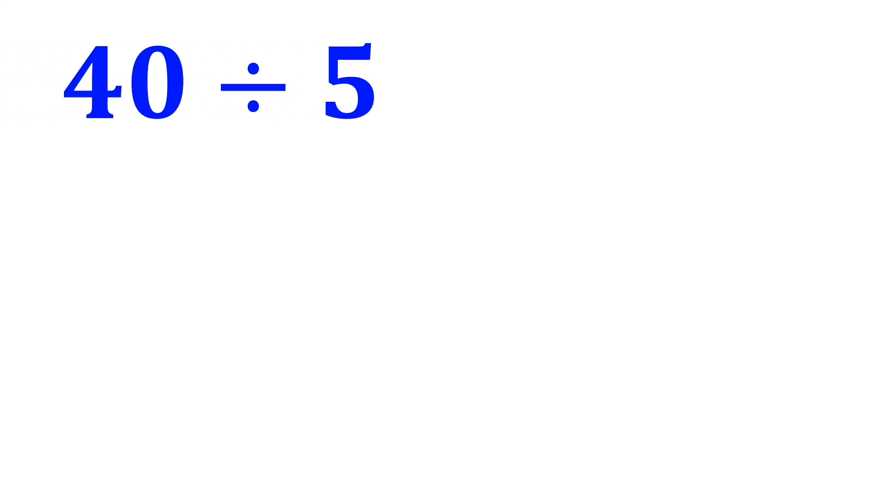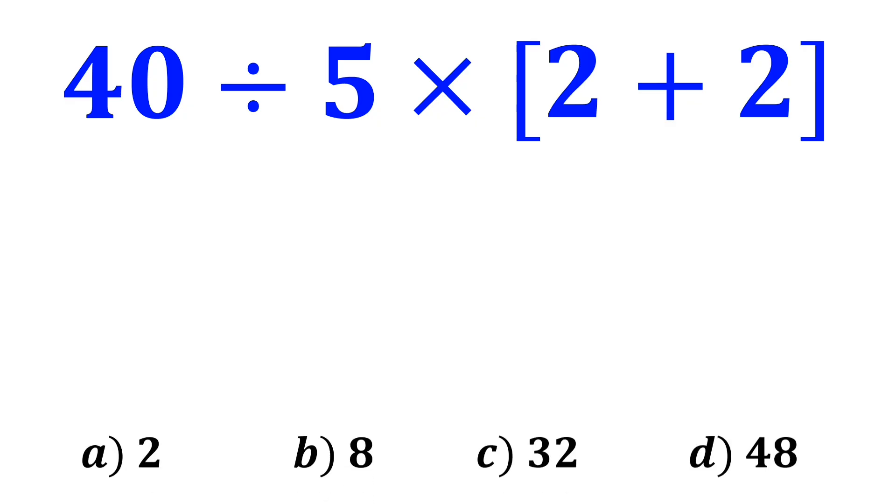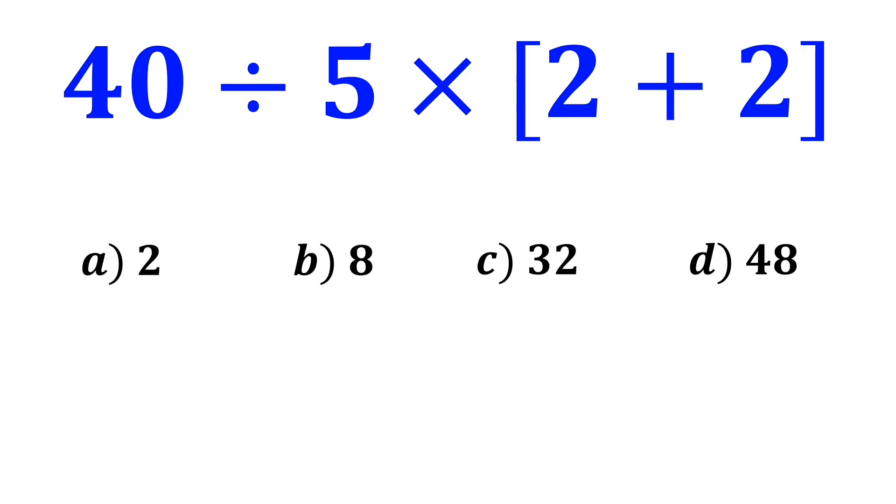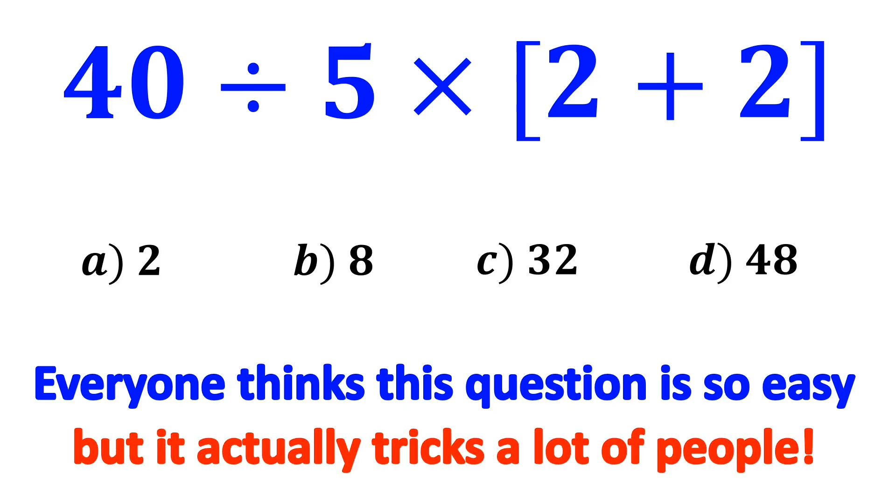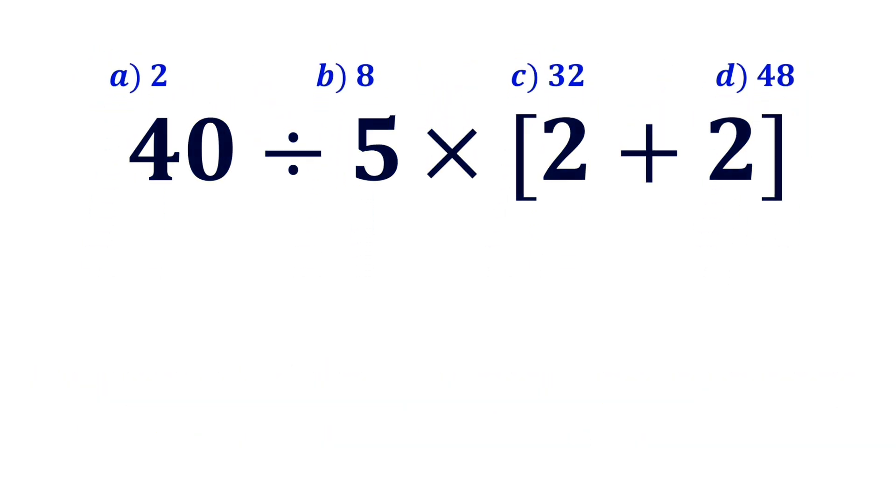What is the value of the expression 40 divided by 5 times open bracket 2 plus 2 close bracket? Which option do you think is the correct answer to this question? Everyone thinks this question is so easy, but it actually tricks a lot of people.